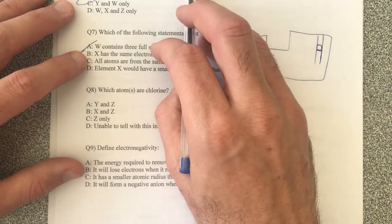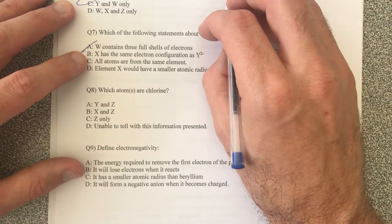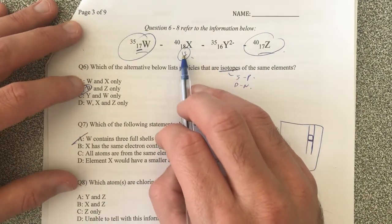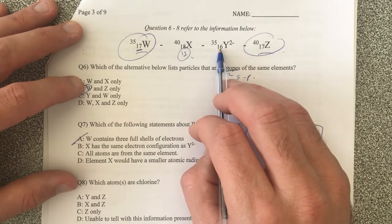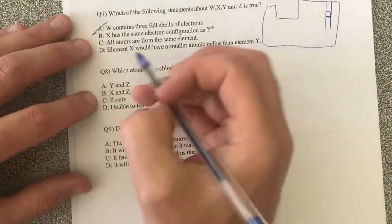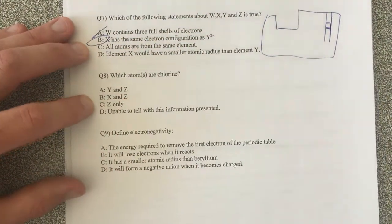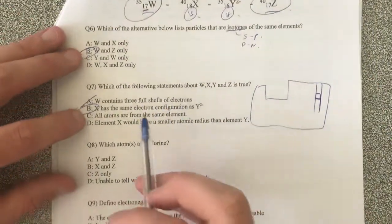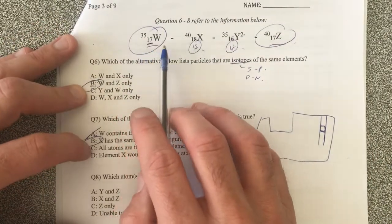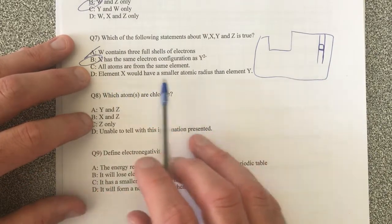X has the same electron configuration as Y2 negative. All right, so X has 18 electrons. Y2 negative, well, it's got 16 neutrons. So X has 18 neutrons, 18 electrons. Y has 16 electrons plus 2, which also has 18. So that actually is true. So X has the same electron configuration because of the charge and all that type of jazz. So all atoms are from the same element. That's not true. You can see that the atomic number changes, making it different. And this one mustn't be true either.